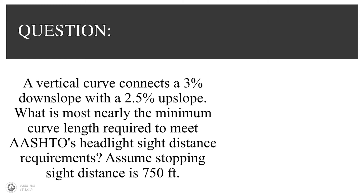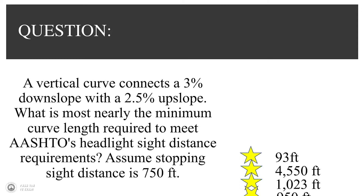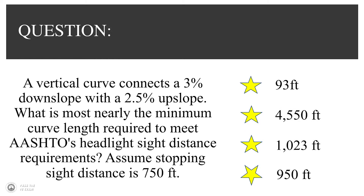Here's the problem: a vertical curve connects a 3% downslope with a 2.5% upslope. What is most nearly the minimum curve length required to meet AASHTO's headlight sight distance requirements? Assume stopping sight distance is 750 feet. Here are your answer choices.